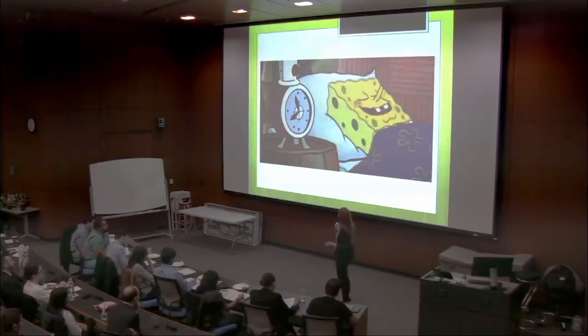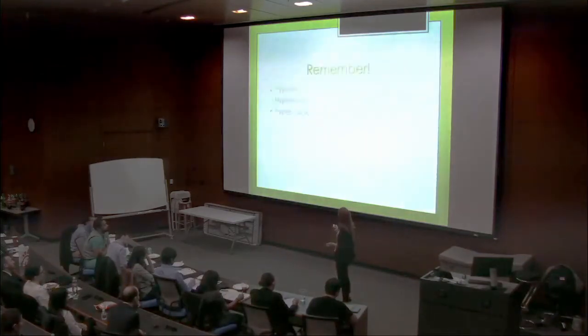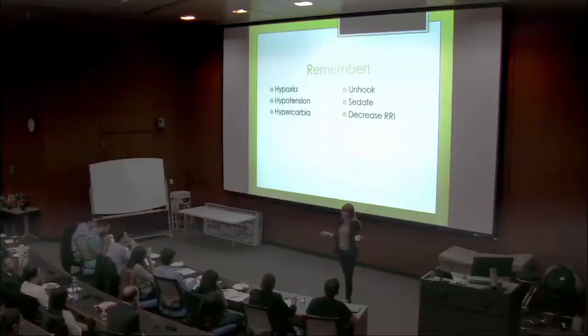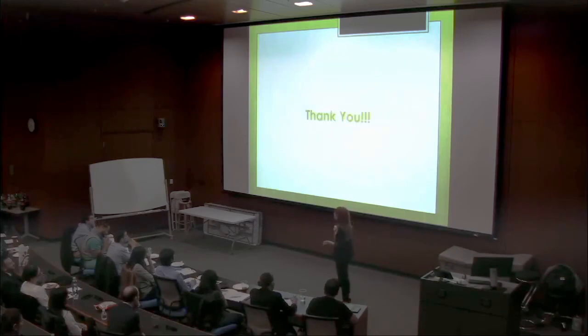Hopefully this is now what your patient looks like — resting comfortably on the vent — and hopefully you and your intern can go back to your call room and get some rest too. Remember: whenever you walk into that room and all the bells are going off and every vital sign is going in the wrong direction, just follow the three simple rules — unhook, sedate, and decrease the rate. That's how you can save an asthma patient's life.